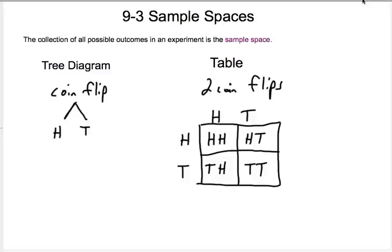So I've done some simple ones here to start. One way to show sample spaces is a tree diagram. So for instance, if the experiment is a coin flip, this tree diagram is showing the collection of all possible outcomes, in this case a heads or a tails.